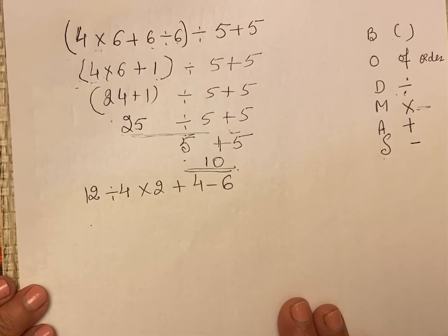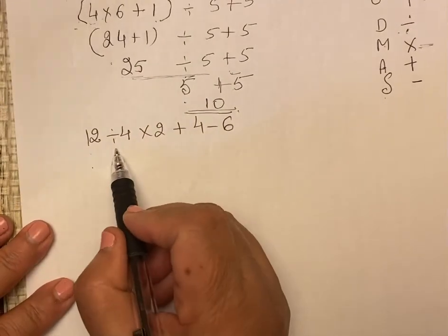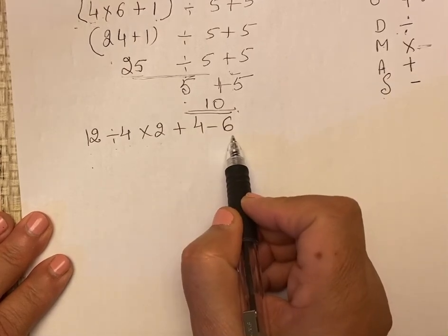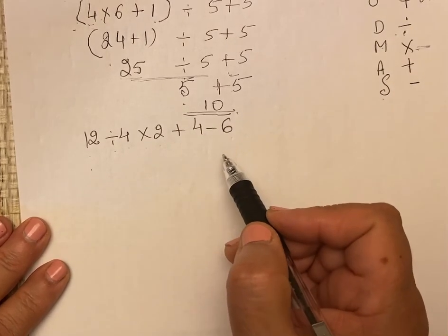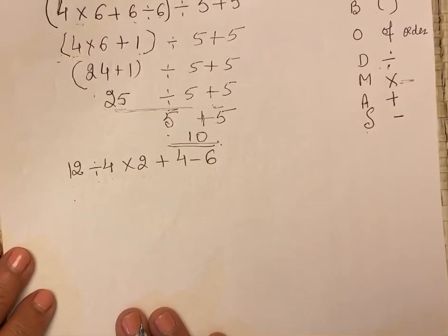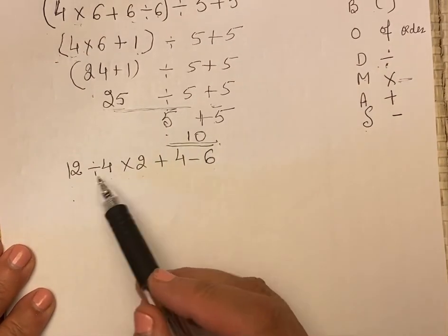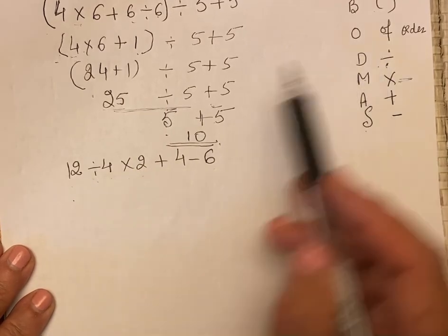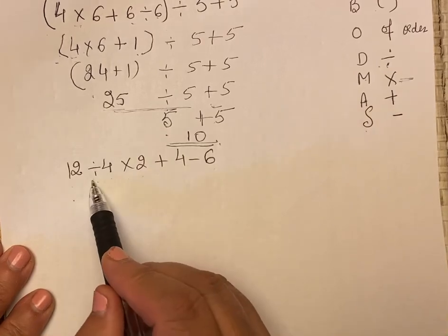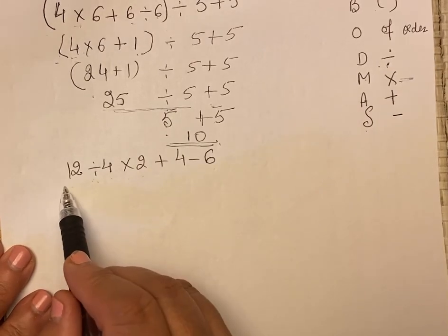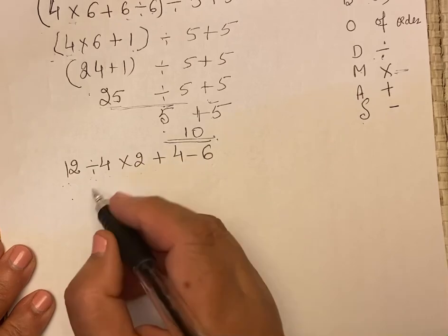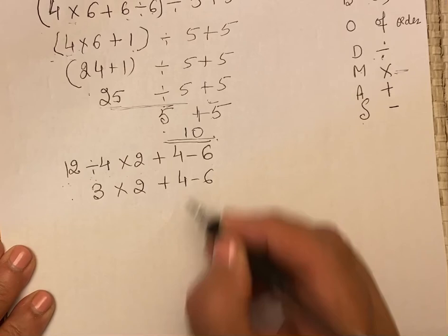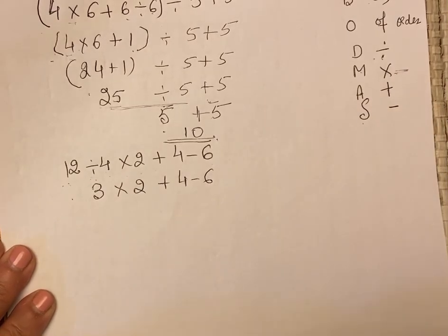One more example we will solve. This is 12 divided by 4 multiplied by 2 plus 4 minus 6. Again, check the BODMAS which sign is given priority. Here it is no bracket, then no of. Then there is division. So we will divide first. 12 divided by 4 is equal to 3. We will write, only one sign is solved at a time to make it clear.